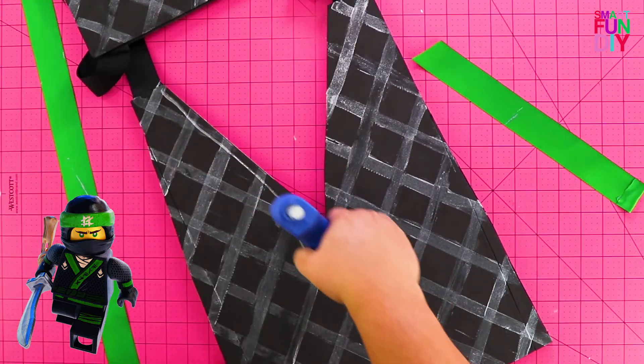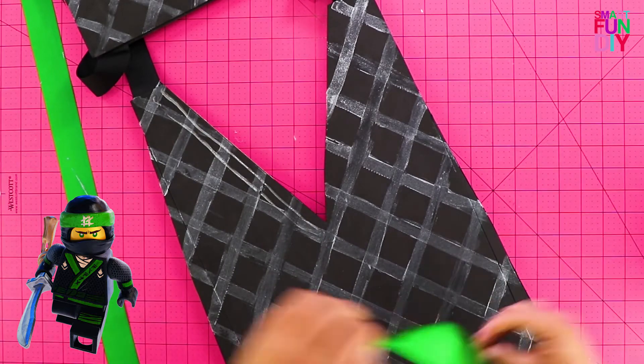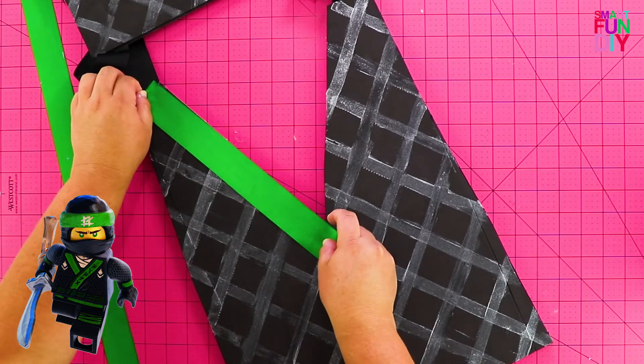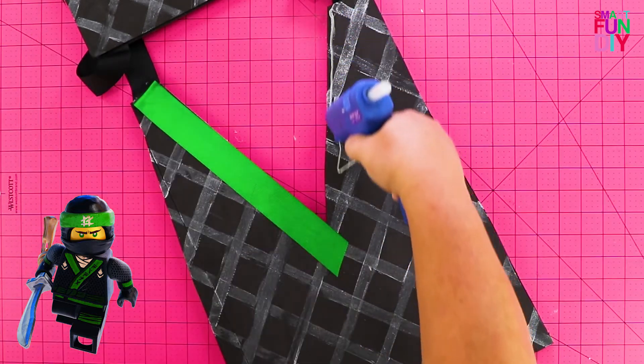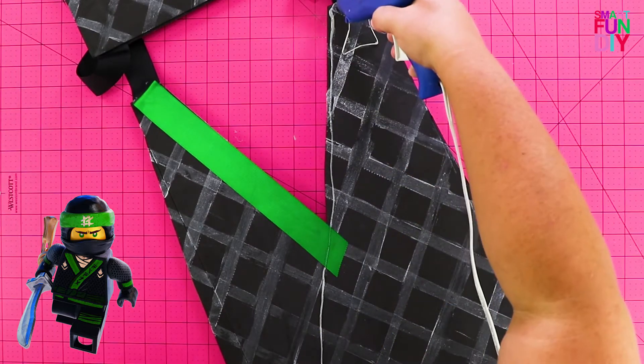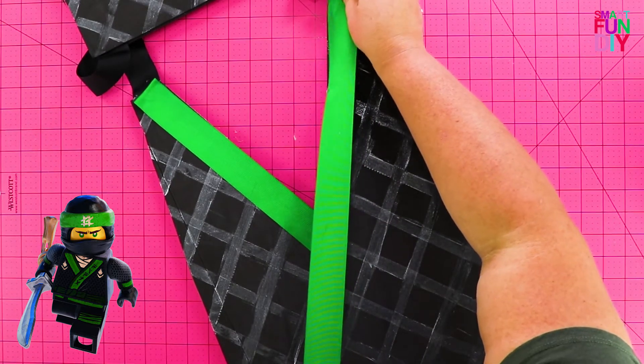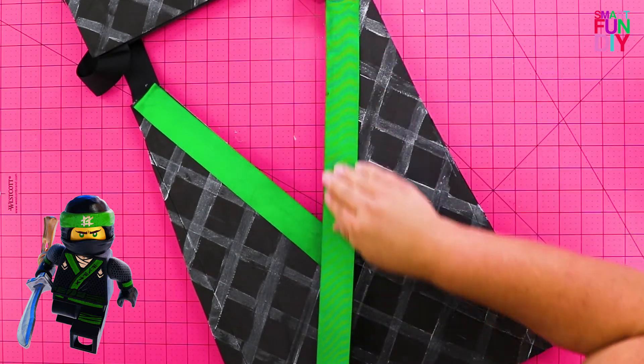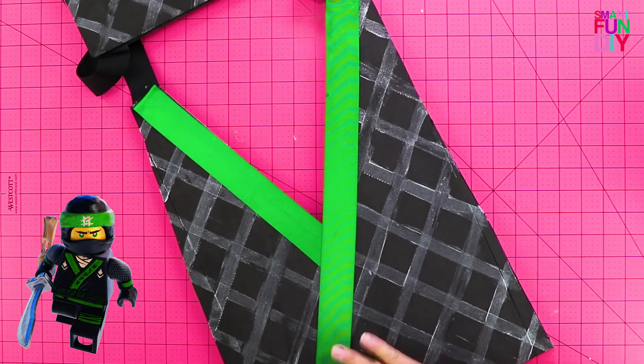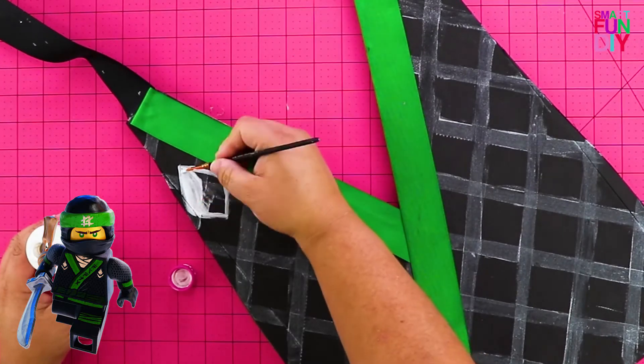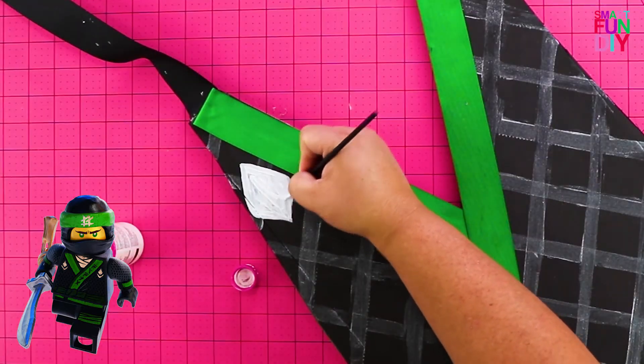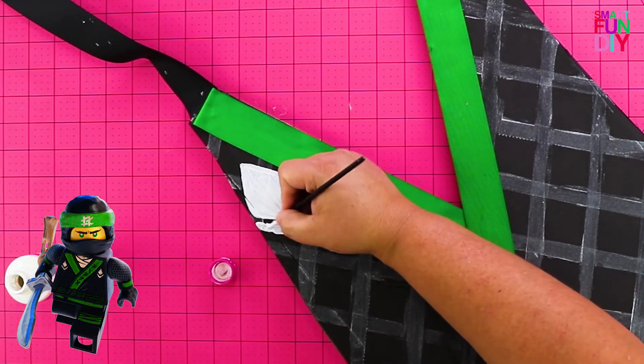Next, we're going to add the trim detail onto this ninja costume and we're just going to use some green grosgrain ribbon, you only need like maybe a yard and a half of this. Once we have that grosgrain ribbon cut, you can go ahead and hot glue it onto the costume. The hot glue will melt the foam a little bit underneath, but we don't really care about that because we're going to see the ribbon, it's going to be on top.